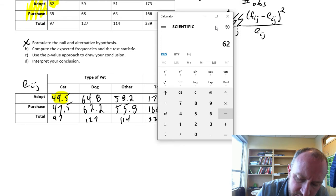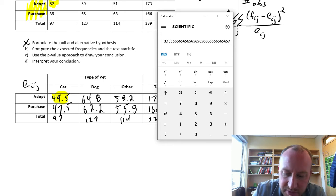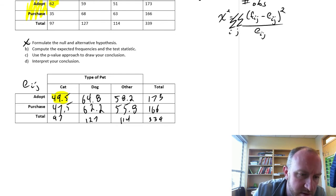So 62 minus 49.5, there's the difference. We square it, and we divide it by the expected value, 49.5. So that gives me 3 point, let's call it 3 point 16. So here I'm going to get 3 point 16.